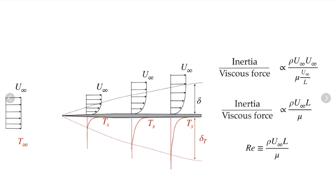So the Reynolds number represents an order of magnitude estimate of the ratio of the inertia force to the viscous forces.